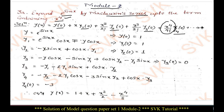Now we are going to find the derivatives of the given function up to fourth order. Consider the given problem as y. So y = e^(sin x). Put x = 0: y(0) = e^(sin 0). Since sin 0 = 0, e^0 = 1. So y(0) = 1.